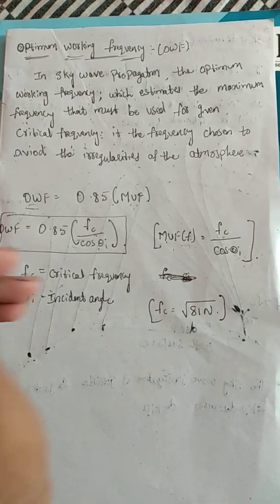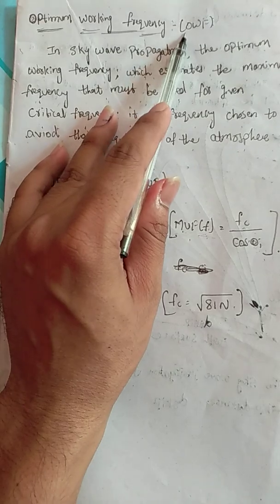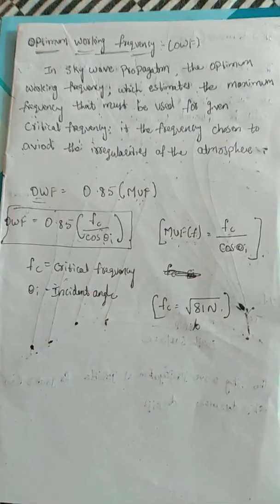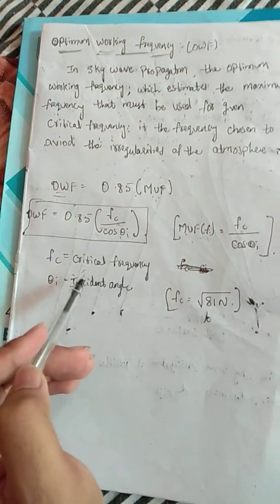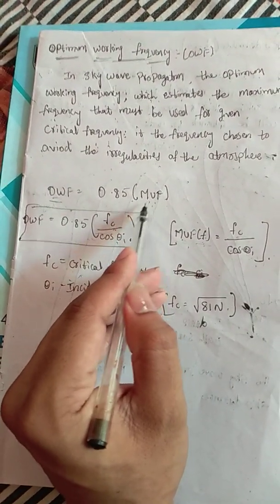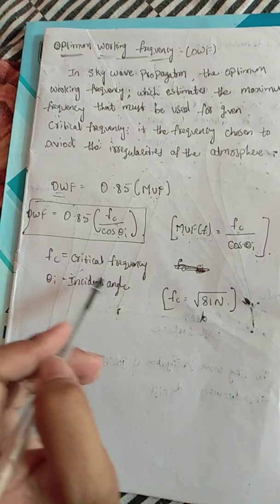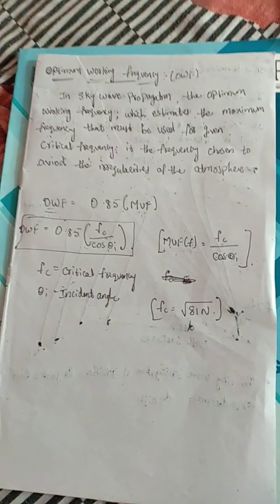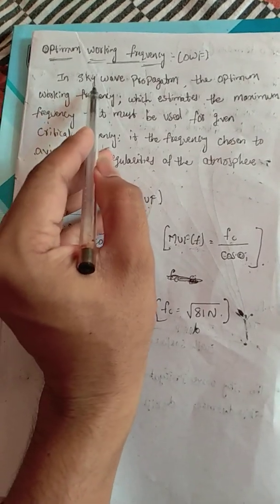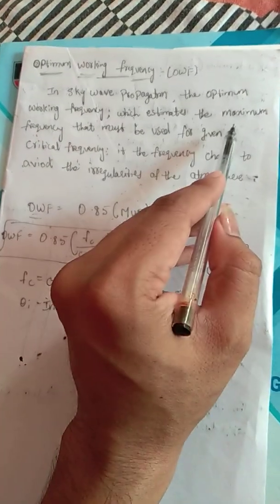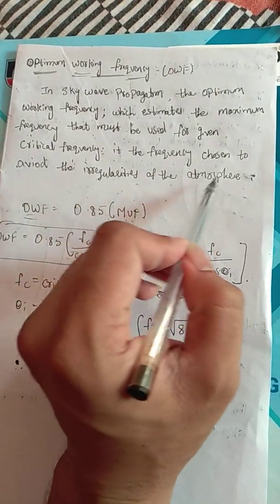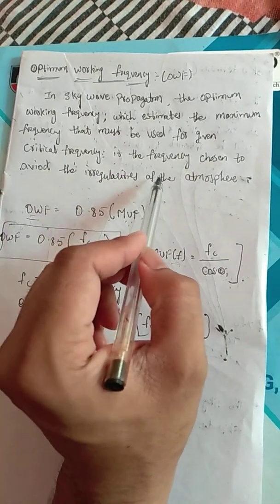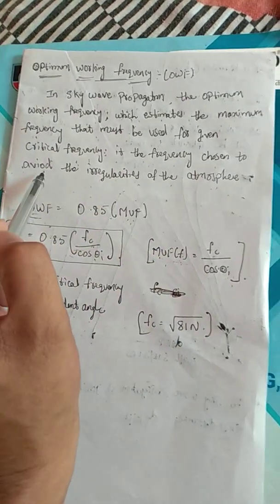Today we are going to discuss a topic called Optimum Working Frequency. This topic is quite associated with Maximum Usable Frequency (MUF) and also critical frequency, which we discussed in previous classes. In sky wave propagation, the optimum working frequency estimates the maximum frequency that must be used for a given critical frequency, and it is the frequency chosen to avoid the irregularities of the atmosphere.